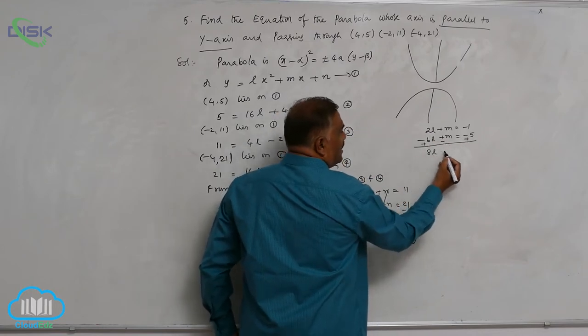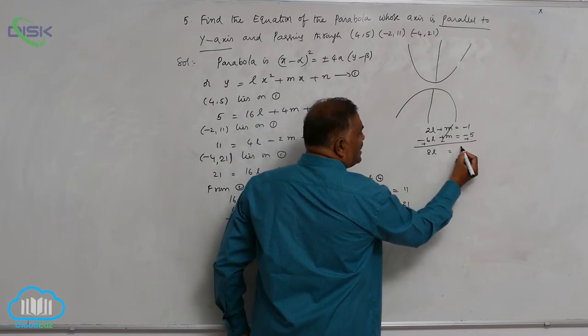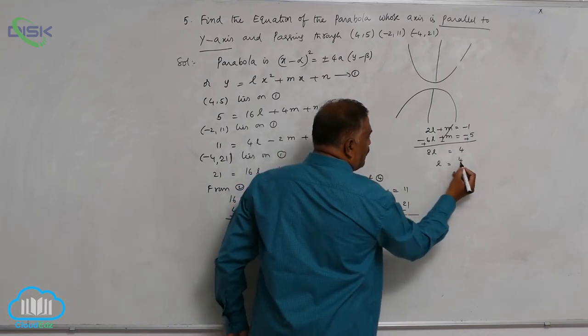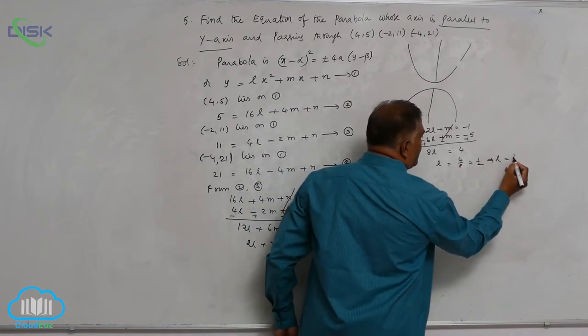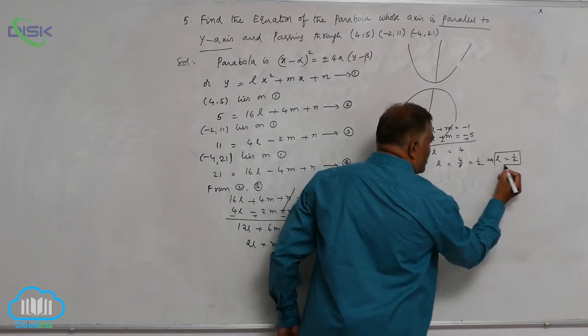This is 8l, is equal to 4. L is equal to 4 by 8, that is 1 by 2. l is equal to 1 by 2 is first value.